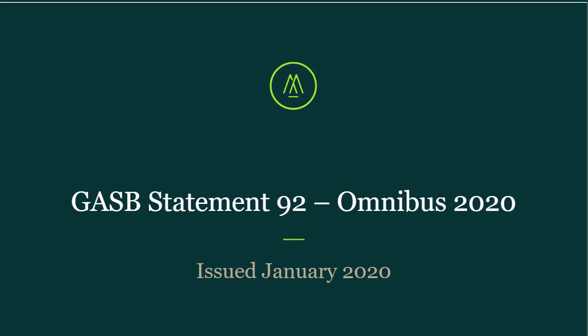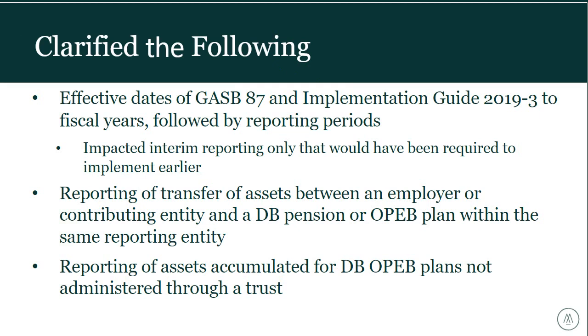Next we'll go through Statement 92, Omnibus 2020. It came out in January 2020 — a very short standard of only five or six pages, definitely worth reading. It clarified various issues across a few other standards.